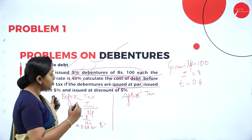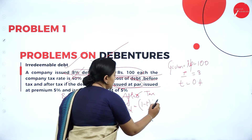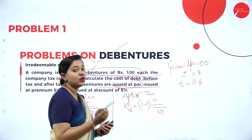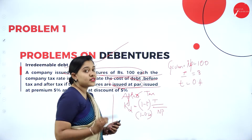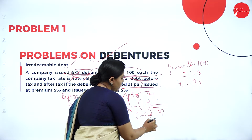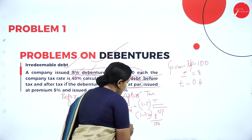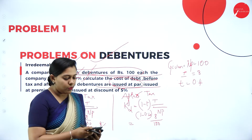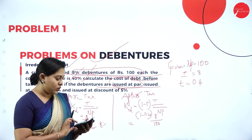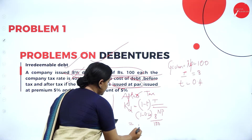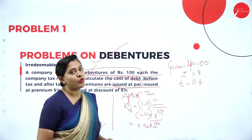Now we calculate issued at par after tax. The formula changes to: cost of debt equals (1 minus tax rate) into interest divided by net proceeds. The tax rate is 0.4, so 1 minus 0.4 equals 0.6. Therefore: 0.6 into 0.08 equals 0.048, or converted into percentage, 4.8%.